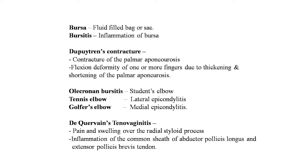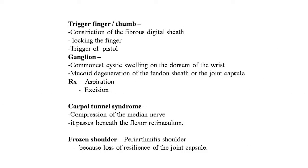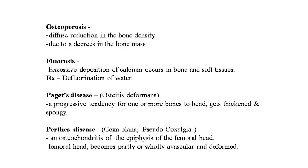Bursitis is inflammation of the bursa (a fluid-filled sac). Dupuytren's contracture is a contracture of the palmar aponeurosis causing flexion deformity of one or more fingers. Olecranon bursitis is student's elbow. Tennis elbow is lateral epicondylitis; golfer's elbow is medial epicondylitis. De Quervain's tenovaginitis involves pain over the radial styloid process with inflammation of the common tendon sheath of abductor pollicis longus and extensor pollicis brevis. Trigger finger involves constriction of the fibrous digital sheath, locking the finger like a pistol trigger. A ganglion is the commonest cystic swelling on the dorsum of the wrist; treatment is aspiration and excision. Carpal tunnel syndrome is compression of the median nerve beneath the flexor retinaculum. Frozen shoulder is periarthritis of the shoulder due to loss of resilience of the joint capsule.